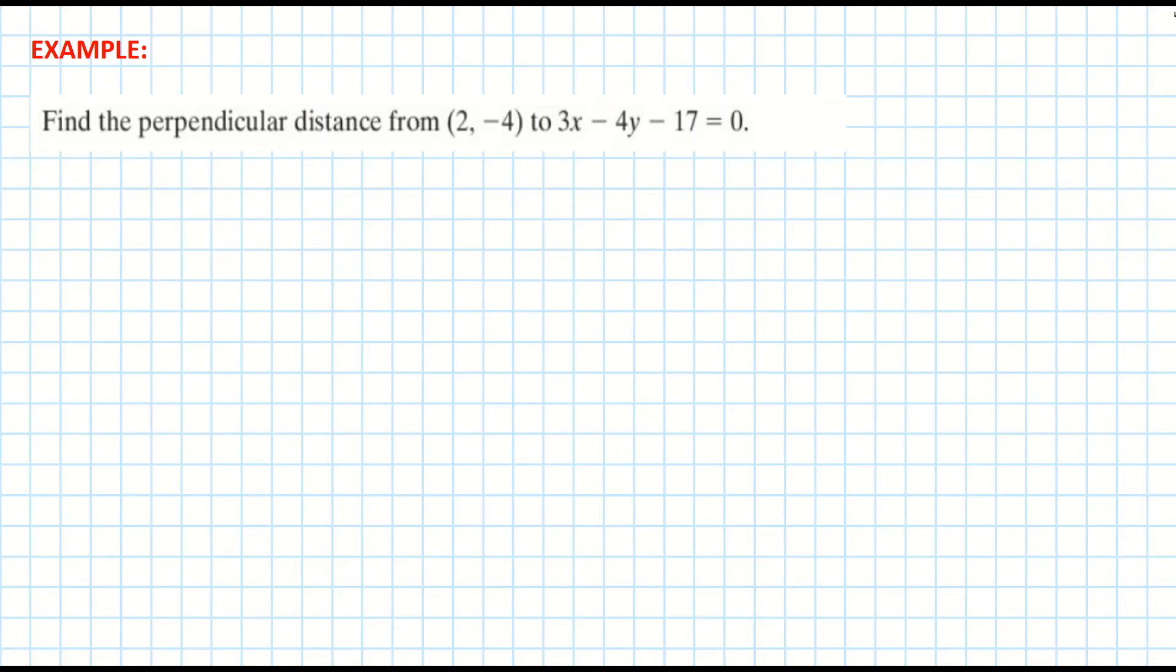Perpendicular distance draws my attention to page 19 in your log tables and we take down our formula. Our formula is ax₁ + by₁ + c all over the square root of a² + b². On the top of my fraction, I put these into the modulus brackets because that means my answer must be positive.